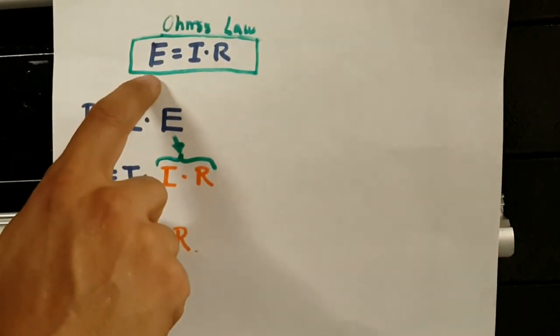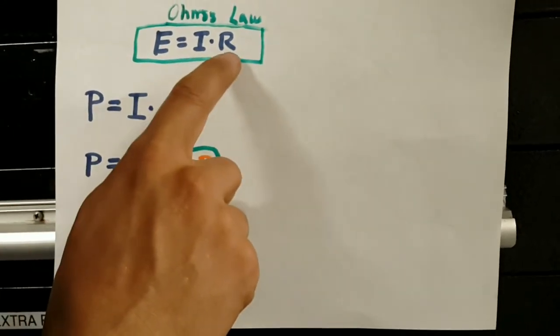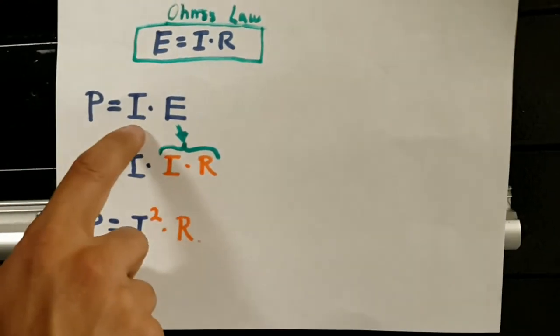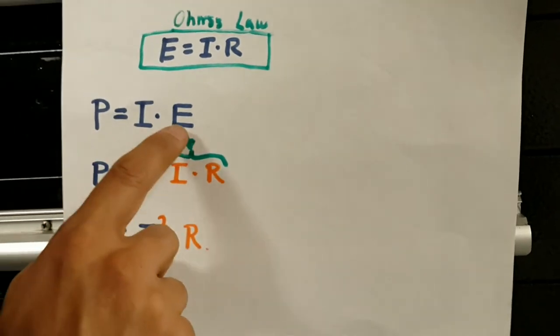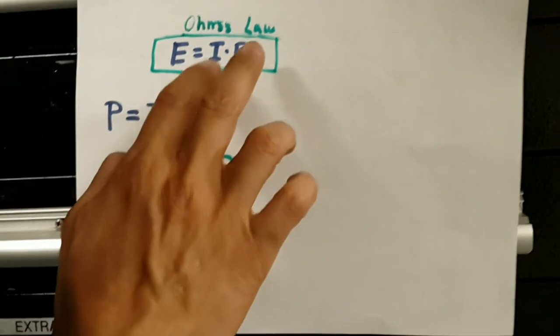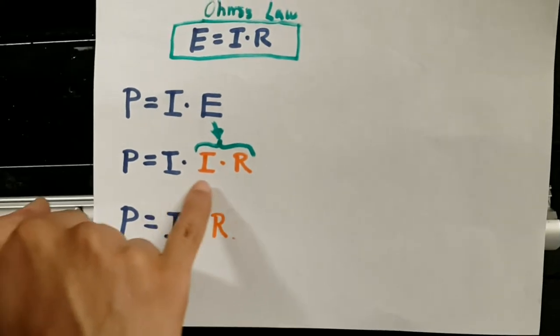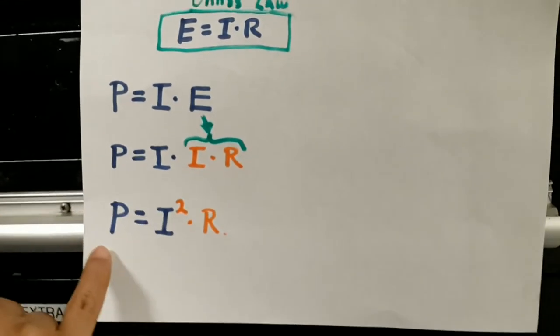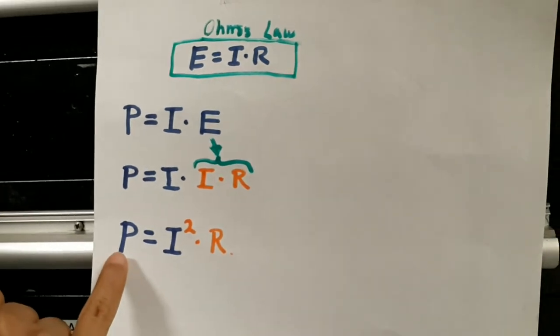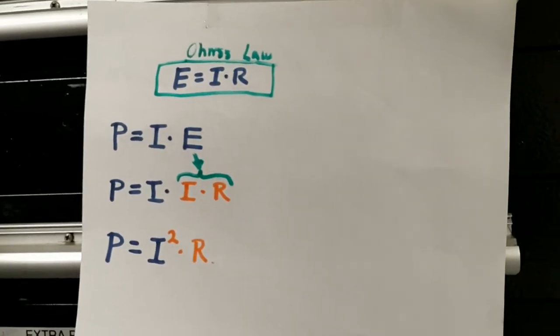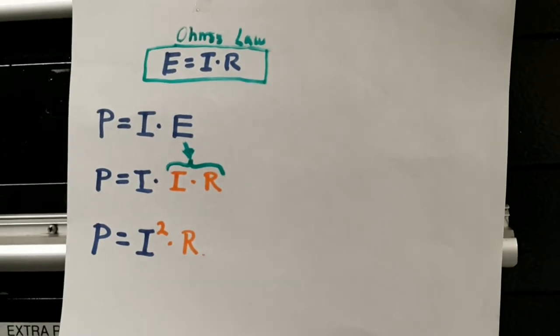Before talking about power, remember that voltage equals current times resistance from Ohm's law. Power equals voltage times current, and if we substitute the Ohm's law expression for voltage, we get a new equation: power equals current squared times resistance, written as P = I²R. We're going to use that formula to calculate the different powers for inductive, capacitive, and resistive circuits.